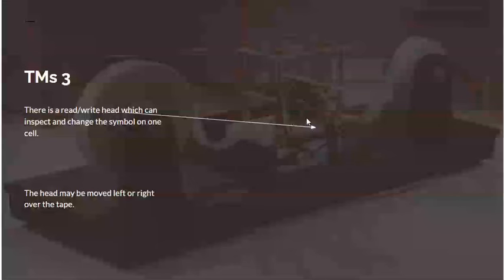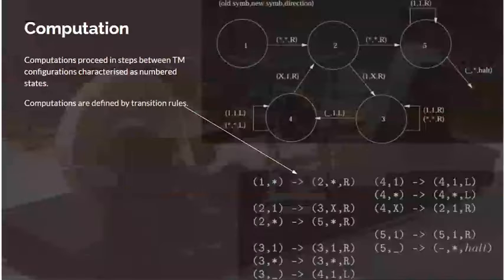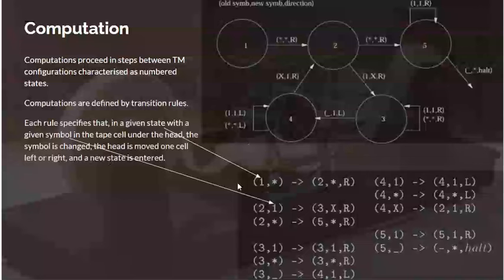There is a read-write head here. In this case, the actual mechanical one does it by rubbing out with a plastic rubber what was on the tape and writes with a pen. It can inspect one symbol at a time. The head may be moved left or right over the tape. In practice, that's done by moving the tape and the head stays stable. Computation proceeds in steps between numbered states. You typically draw a Markov-type diagram here showing the numbered states and you label the transitions by the transition rule that's being applied. Each rule specifies that you're in a given state, for instance this one here, with a given symbol. The star means any symbol. It says what happens then. You move from state one to state two, moving to the right, printing a star, whatever you had under it.